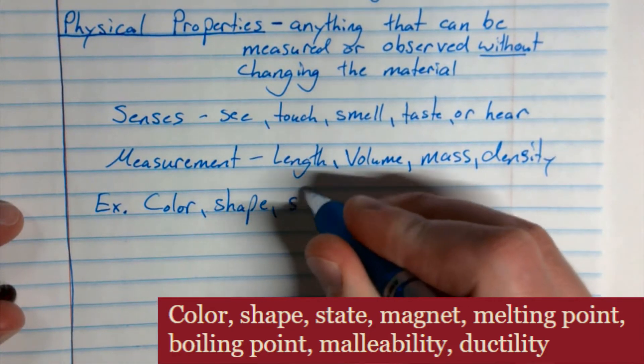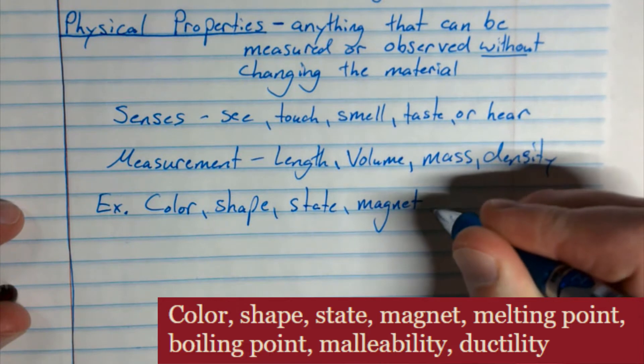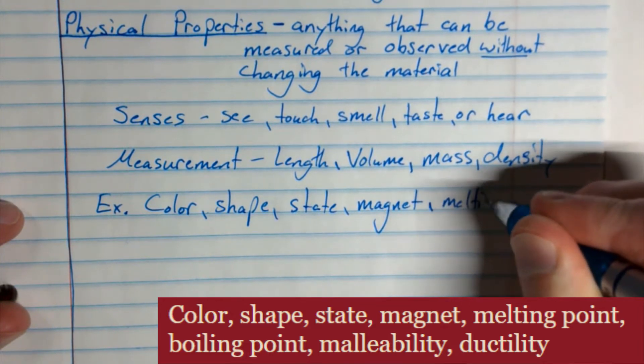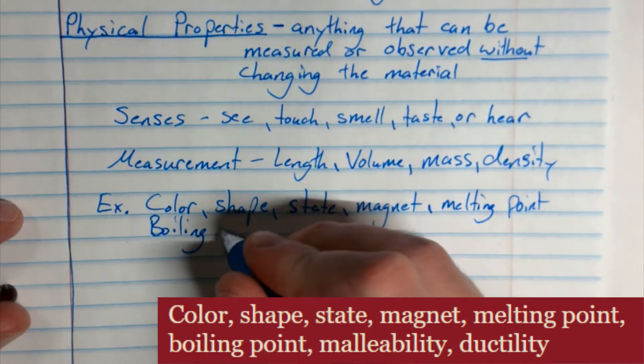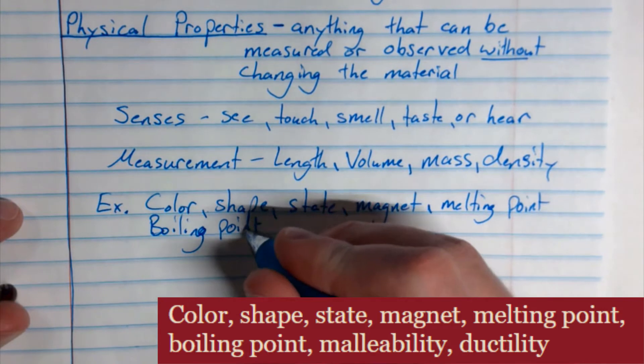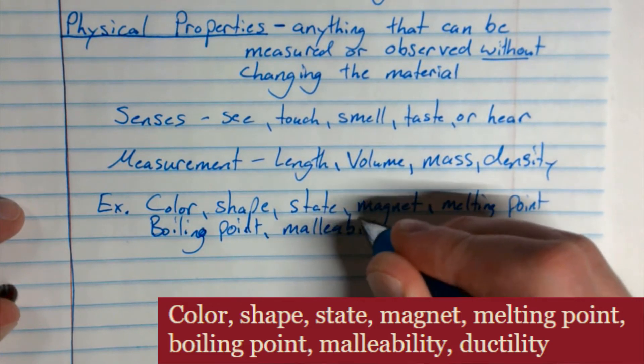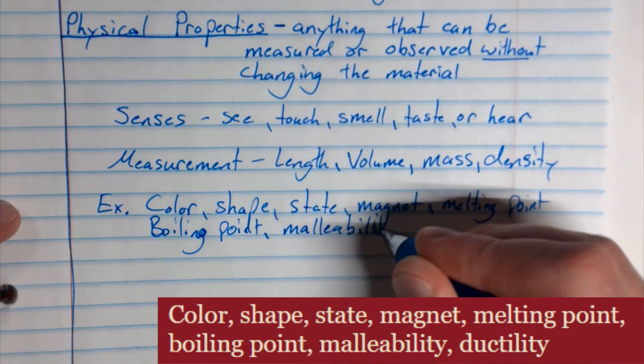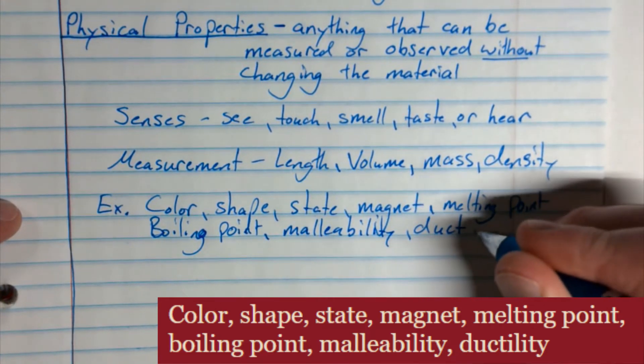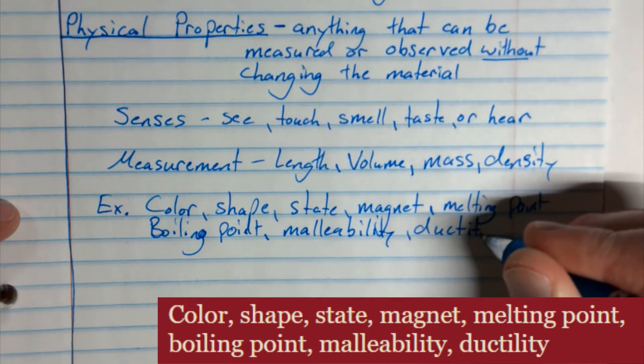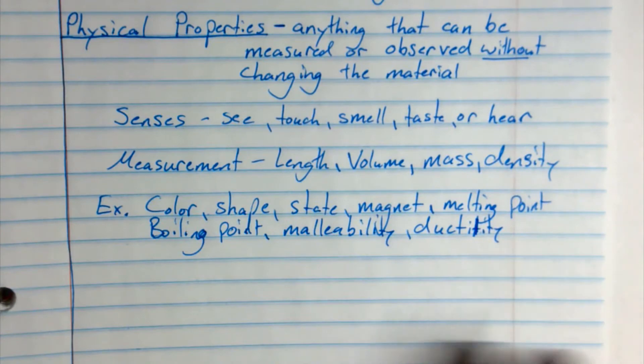So let's write some of these down. So we have color, shape, state. That's liquid, solid, gas, those sort of things. Magnet. Melting point. Boiling point. Malleability, whether it is malleable. And ductility. This is not whether it is a duct, it is whether it can turn into a wire form.